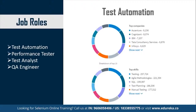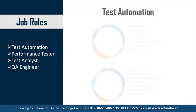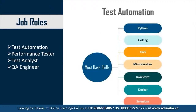The top skills required to become a test automation engineer include knowledge of testing, agile methodologies, SQL, test planning, and manual testing. Apart from these, you need to be well acquainted with programming languages like Python, Golang, and JavaScript. You also need to be well versed with AWS, microservices, Docker, and Selenium. These skills will help you move to a higher position as a test automation engineer and add up to your appraisal.